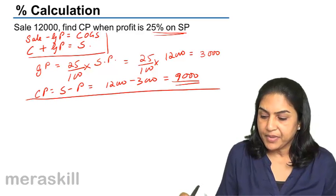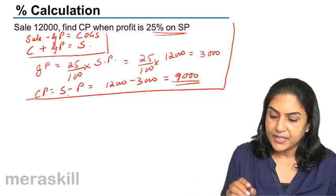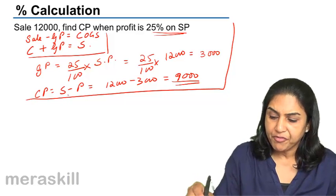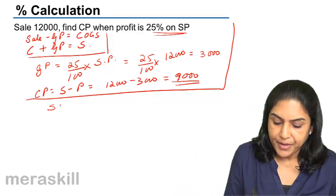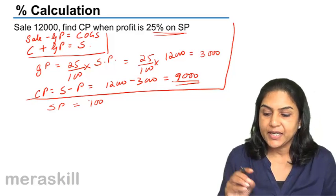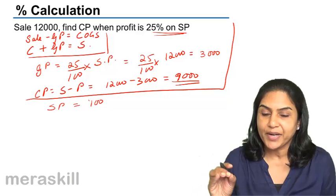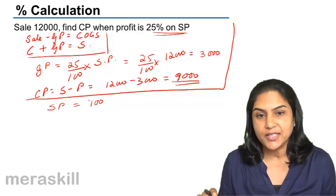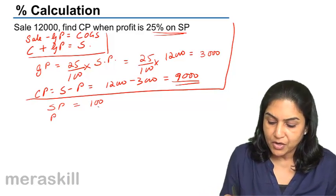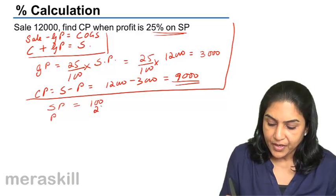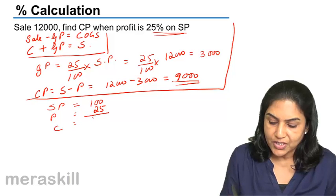Now let us look at the same thing in another way. When profit is given as 25% on selling price, we take selling price as 100. If it is 25% on cost, we take cost as 100. So if selling price is 100, profit is 25, which means cost is 75.